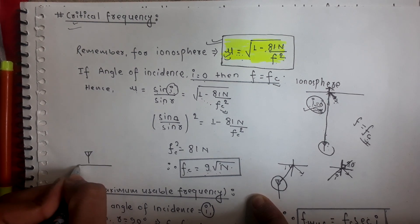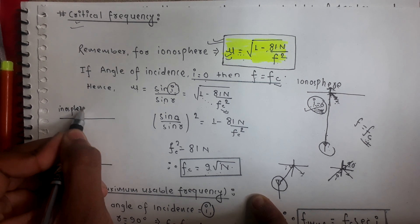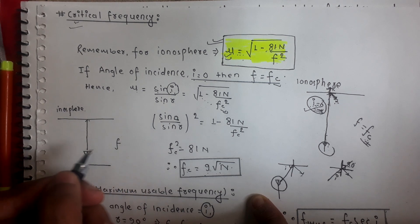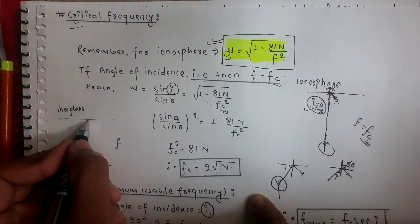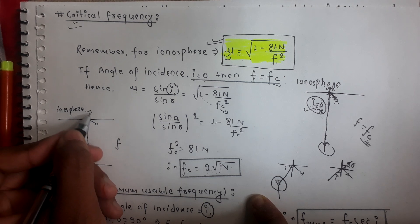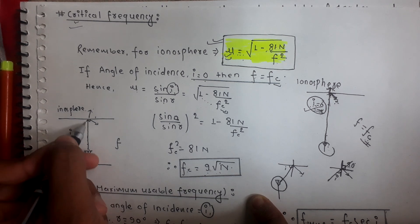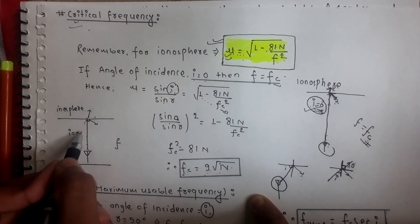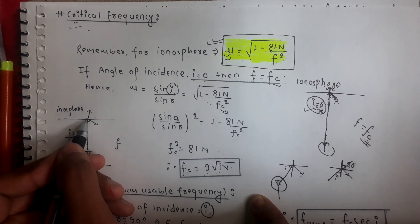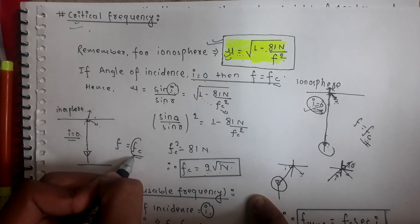What is the critical frequency? Suppose I have an antenna here on the earth and this is the ionosphere, and I emit a wave of certain frequency — say the frequency to be F. At a certain frequency, the wave will reflect back to the earth, and if the frequency exceeds that value, the wave will penetrate the ionosphere. For the angle of incidence zero degrees, the frequency that causes the wave to reflect back to the earth is known as the critical frequency.